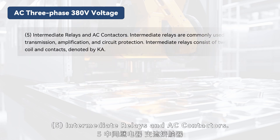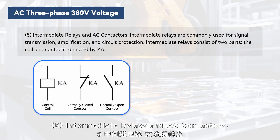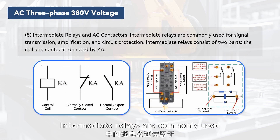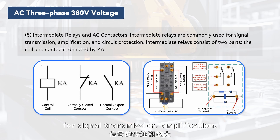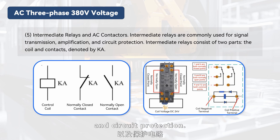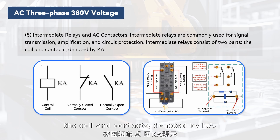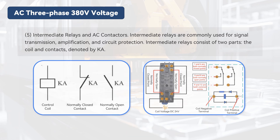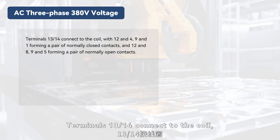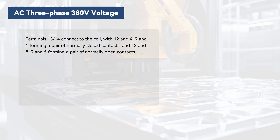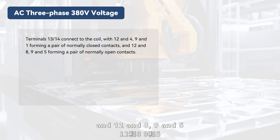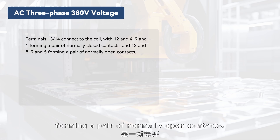Component 5: Intermediate Relays and AC Contactors. Intermediate relays are commonly used for signal transmission, amplification, and circuit protection. Intermediate relays consist of two parts: the coil and contacts, denoted by KA. Terminals 13 and 14 connect to the coil, with 12 and 4, 9 and 1 forming a pair of normally closed contacts, and 12 and 8, 9 and 5 forming a pair of normally open contacts.